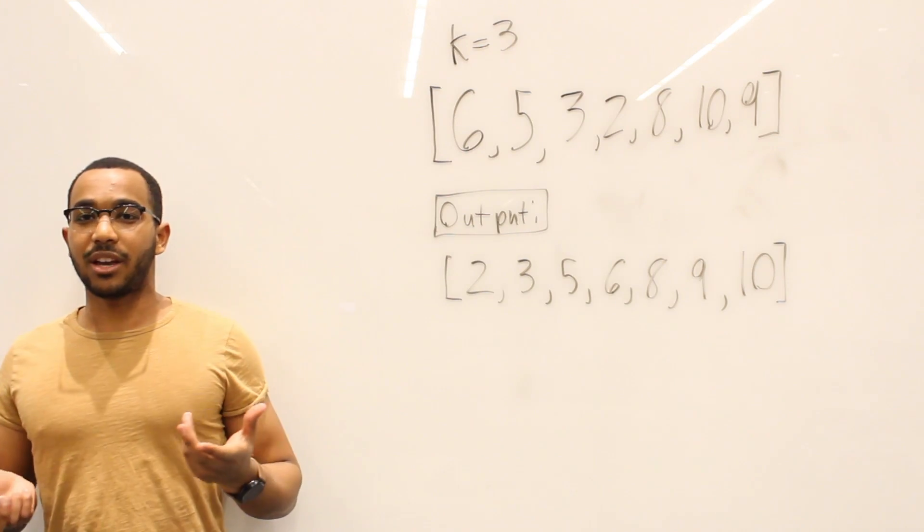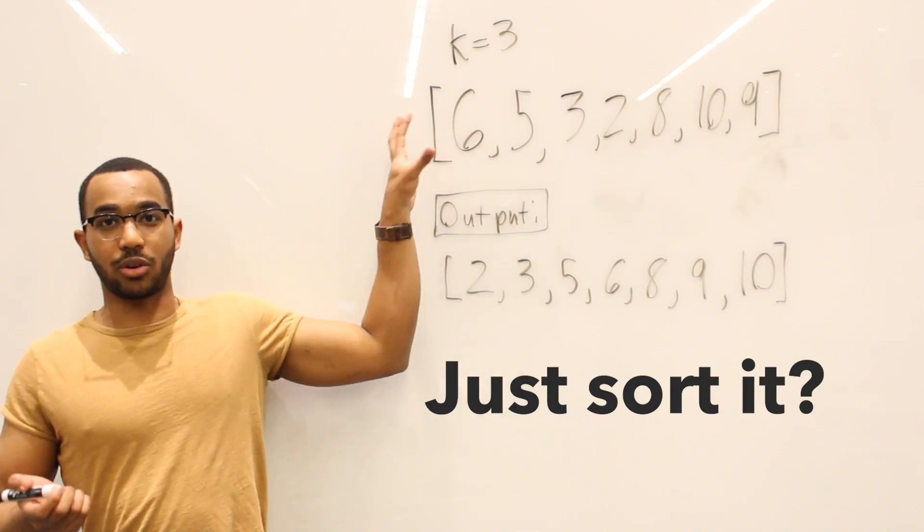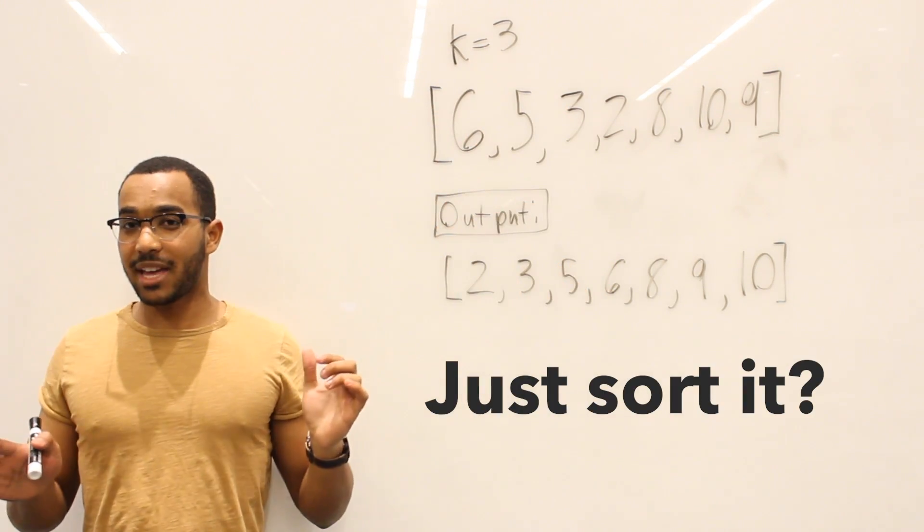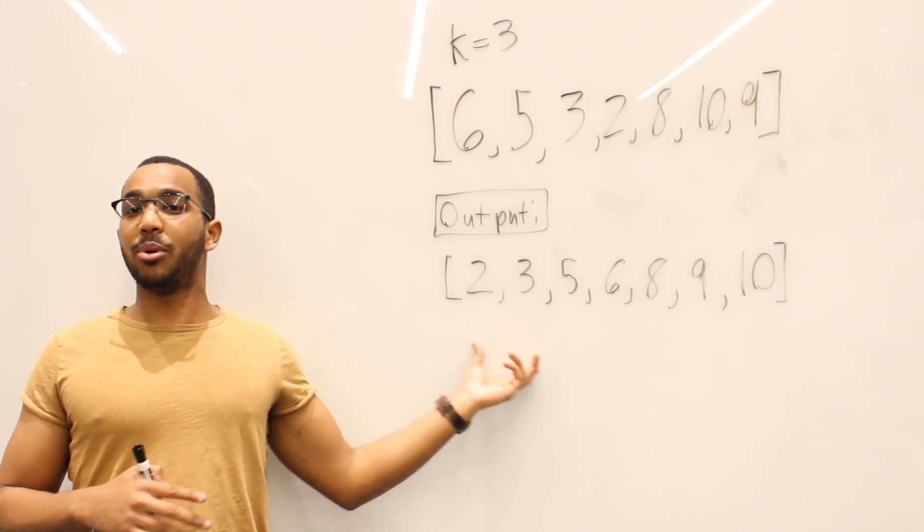So your goal is to take this information and produce a sorted array as efficiently as possible. And what you immediately think of is just sort the array, right? Just take this original array, forget about what K is, and just output a sorted array.